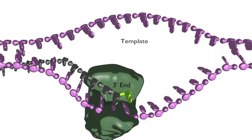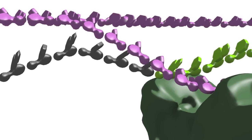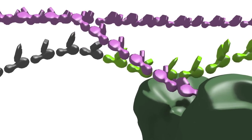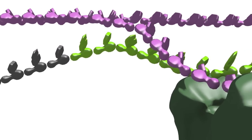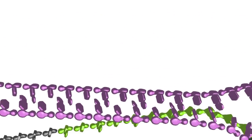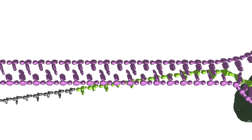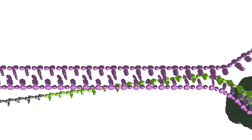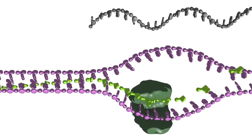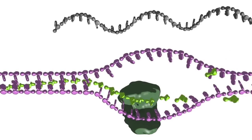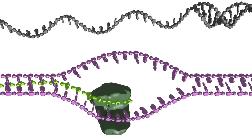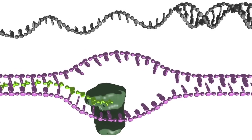However, this D-loop replication does not form an extended region of heteroduplex between the newly synthesized green strand and the template pink strand. Rather, a small bubble containing the template, a short region of the newly synthesized DNA, and the displaced strand forms and tracks across the pink template strand.